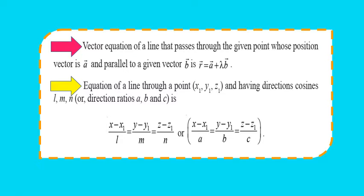First is the vector equation of a line that passes through a given point whose position vector is a, and is parallel to a given vector b. This is given by r = a + λb, where we have point A having position vector a, and the line is parallel to the direction of a given vector b. So the equation will be r = a + λb, where λ is some constant.